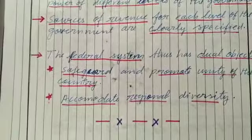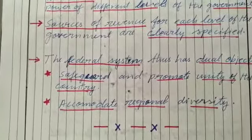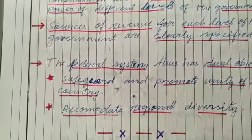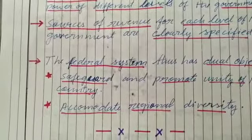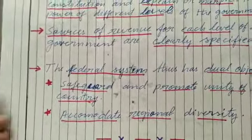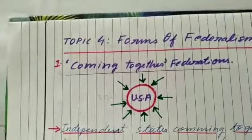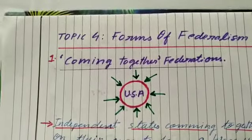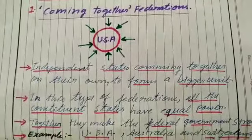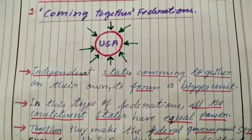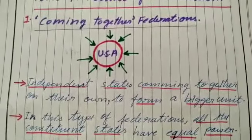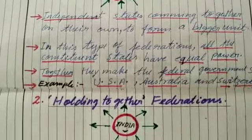Now how do these countries decide which form or type of government they have to establish after establishing a democracy? Is there only one type of federal form of government, or are there other types as well? The forms of federal government basically depend on the historical background. Most of the time, the exact balance of power between the central and state government varies from country to country, depending mainly on their origin. There are basically two kinds of federations in the world: one is coming together, and the second is holding together.